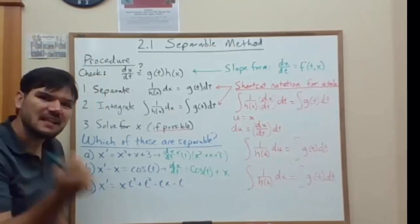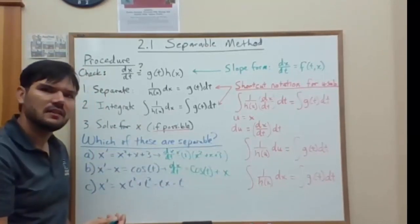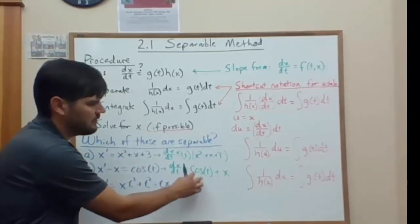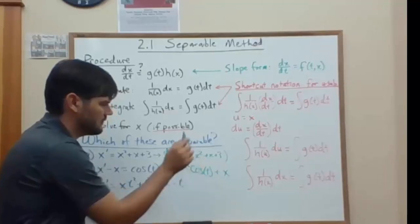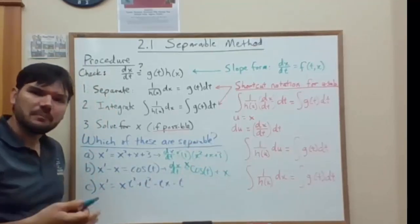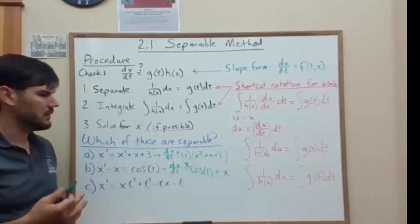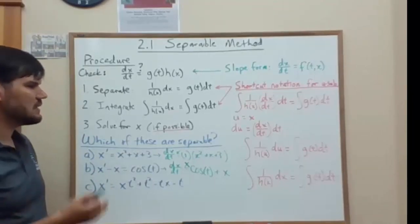No. That sum of a function of t plus a function of x does not allow us to factor it as a product. So that is not separable. It cannot be solved using the method of separation of variables. It can still be solved, we'll see later, but it cannot be solved with this method.